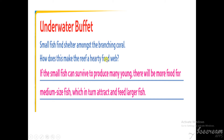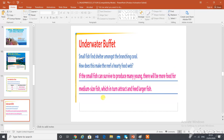How does this make the reef a hearty food web? If a small fish can survive to produce many young, there will be more food for the medium-sized fish. When the medium-sized fish population grows, it attracts larger fishes, which then feed on the medium-sized fish. This creates a rich, interconnected food web.